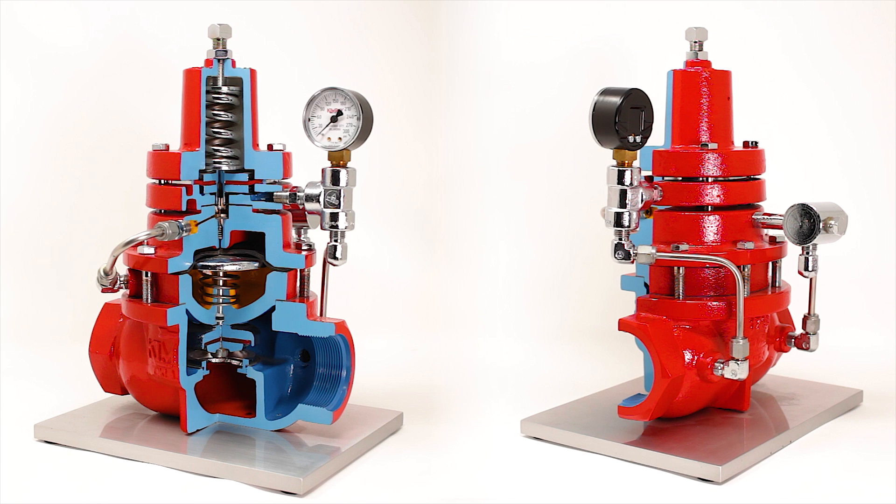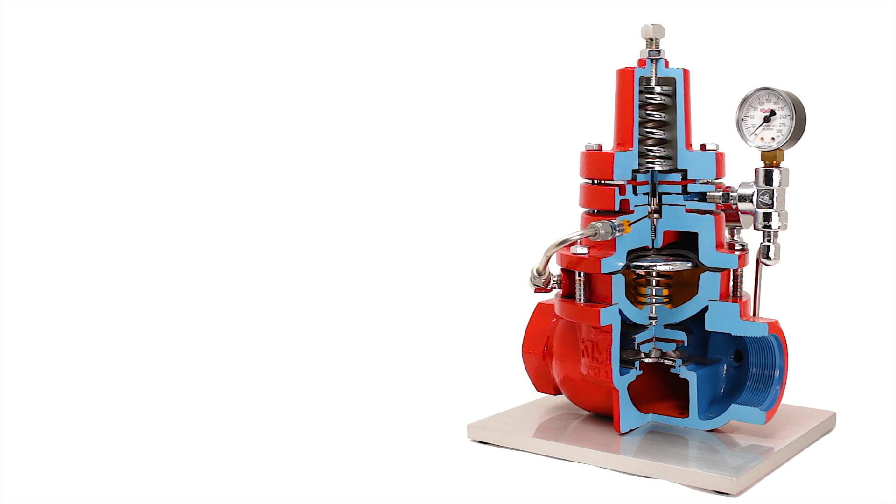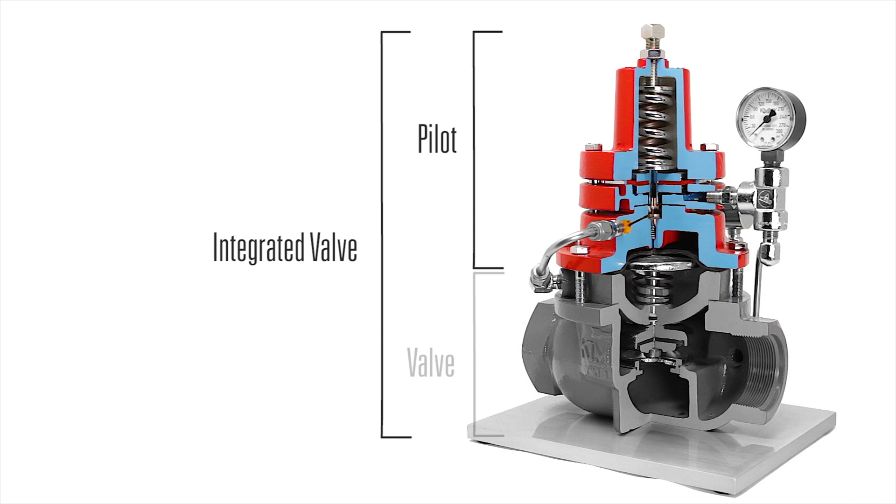Kimray's pressure-reducing regulator is used to create and hold a downstream set point. This valve is considered an integrated valve because the pilot and valve are one piece.